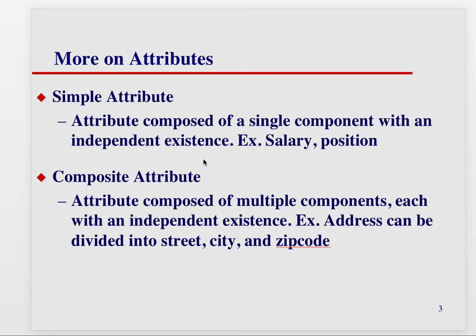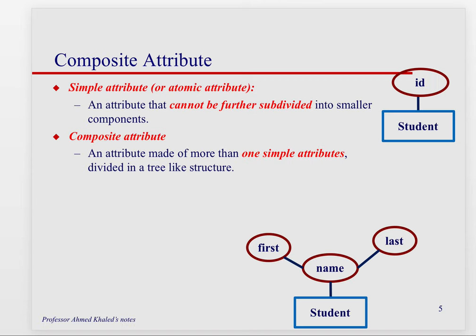There's more we can do with attributes in ER diagrams. You can have a simple attribute, which is what we've been discussing — salary, position — but you can also have a composite attribute, which is an attribute that has multiple components. For example, an address has several components: street, city, zip code, state. Similarly, name is made up of first name and last name.